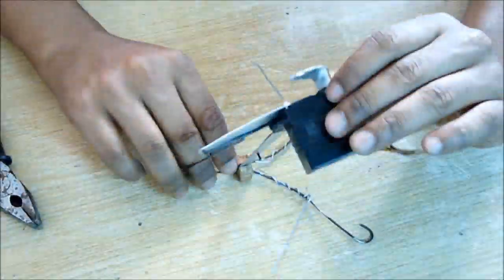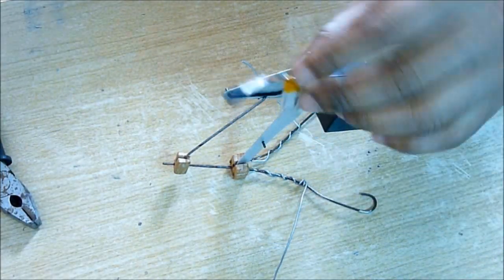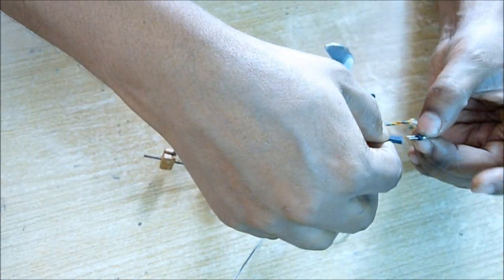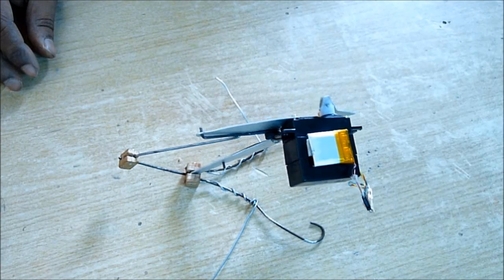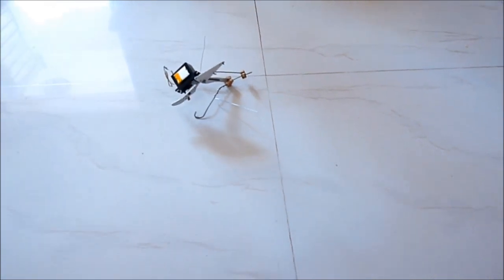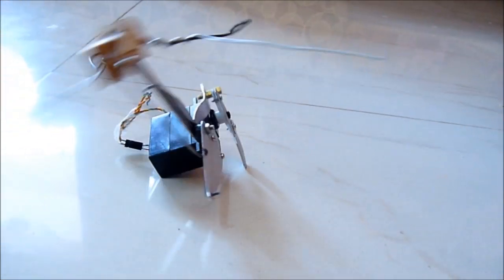To power up, I'm going to use a 4.2-volt lithium rechargeable battery and power it up. You can see that this spring action is happening and the robot toy is jumping. You can see it's jumping forward and backward. Hope you enjoyed.